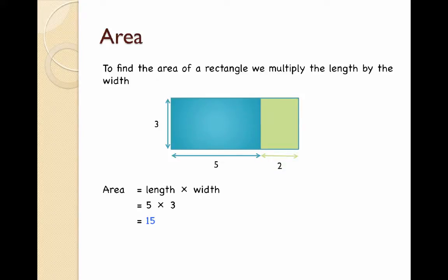Now if I added another piece of area to it, like that green area, the area is still the length times the width. To find the area of that green rectangle, the area will be 2 times 3, which gives me an area of 6.